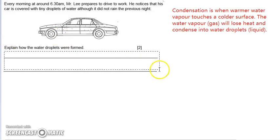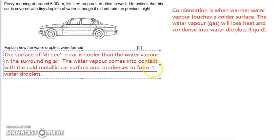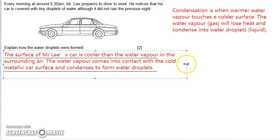So explain how the water droplets were formed. You could just write that the surface of Mr. Lee's car is cooler than the water vapor in the surrounding air. The water vapor comes into contact with the cold car surface and condenses to form water droplets.